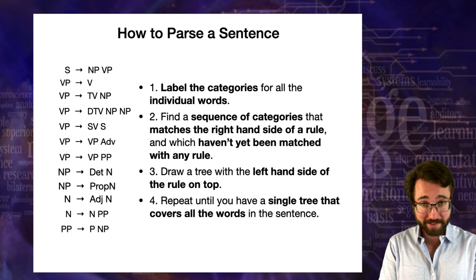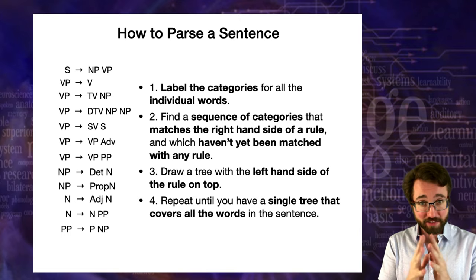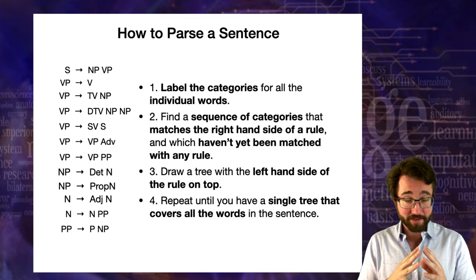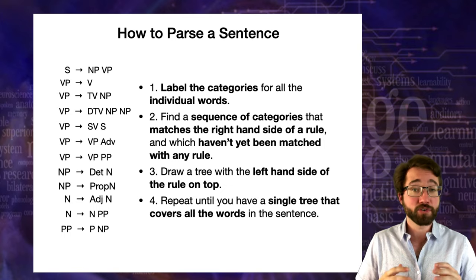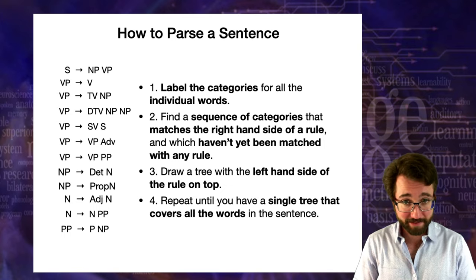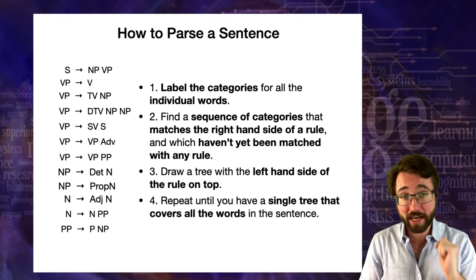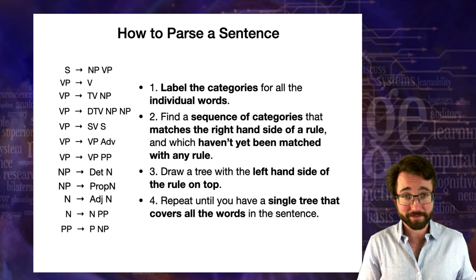To conclude: how to parse a sentence. Start by labeling your syntactic categories. Next, find a sequence of categories that matches the right-hand side of some rule and which hasn't yet been matched. Then draw a tree with the left-hand side of that rule on top. Repeat, possibly backtracking, until you have a single tree that covers all the words in the sentence with S on top.